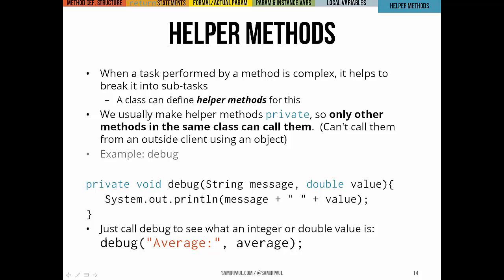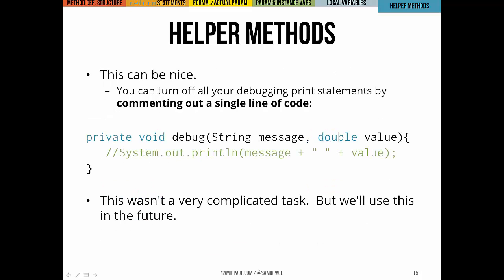Another example is here if you had a method called debug that just took a little message and a value that you wanted to print out. Then any time you wanted to see what a variable's value was, you could just call that method. In this case, that would look like debug, and then we'd pass the message average, and then the actual variable average itself.